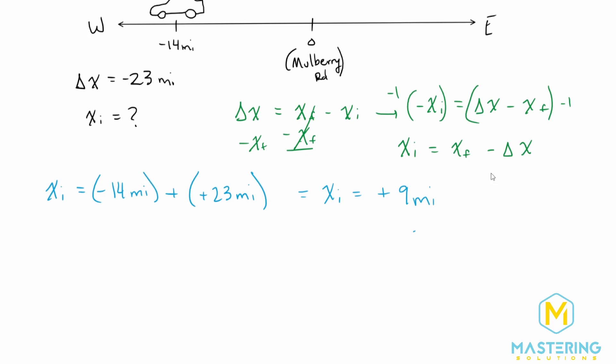This tells us the car started in the positive direction, meaning it was to the east of the origin, or east of Mulberry Road.